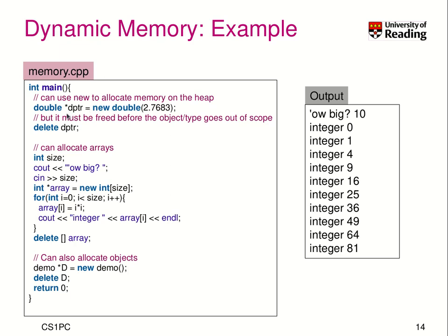We want to create a double value with the value 2.768 and so forth — we get a pointer. Then we free this pointer again. We also want to allocate an array and ask the user how big it should be. We use the new operator to create an array of a certain size, then iterate through it computing the quadratic number i times i and printing it out — so we see 0, 1, 4, 9, and so on. Then we free the array using the delete[] operator in C++.